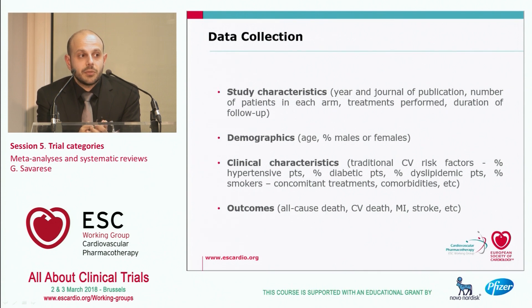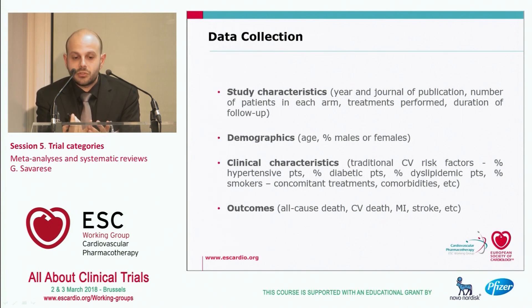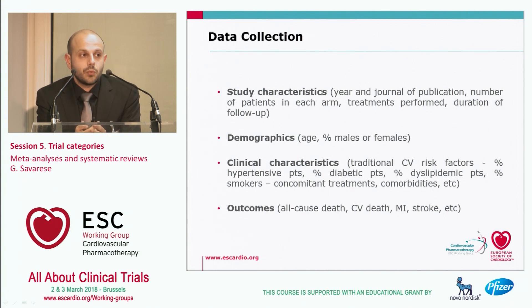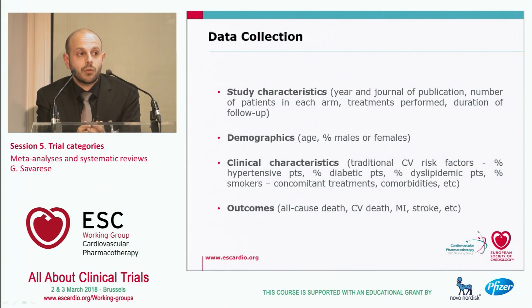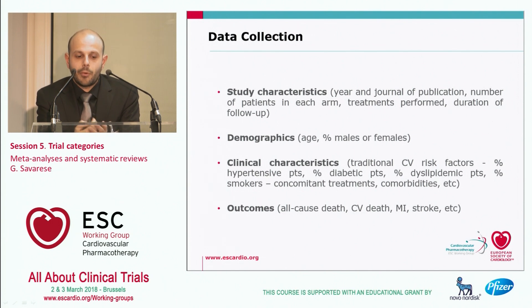Important variables to extract from studies for a meta-analysis or systematic review include study characteristics such as the year, author, journal, number of patients in the treated and control arms, and length of follow-up. It is also important to describe the population by collecting demographics and clinical characteristics, such as traditional cardiovascular risk factors. For a meta-analysis in particular, it is especially important to collect outcome data, for example all-cause mortality, cardiovascular death, myocardial infarction, and stroke.